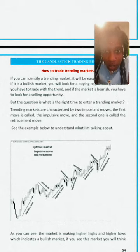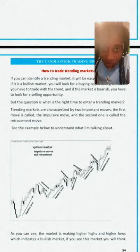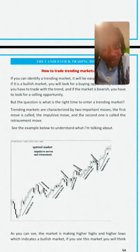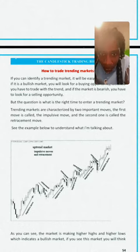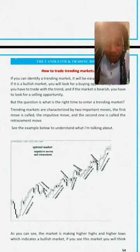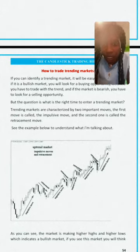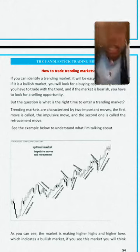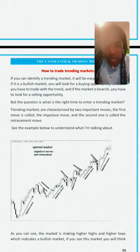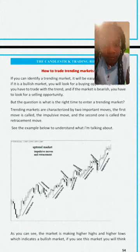An impulse means it's the big move. Retracement means the market always pulls back down before going back up. Our educators explained it like a slingshot: if you want something to fling far, you have to pull it back in order to get that trajectory.